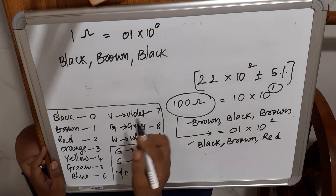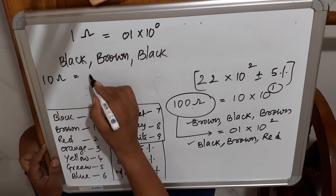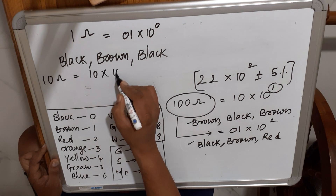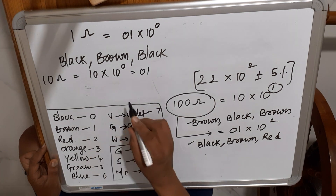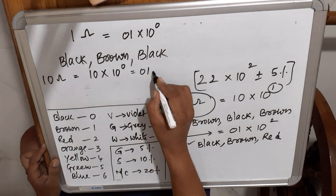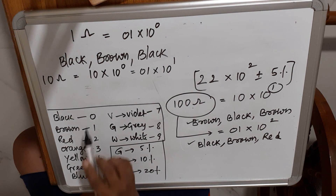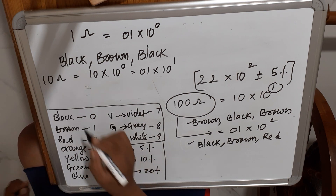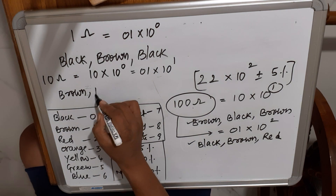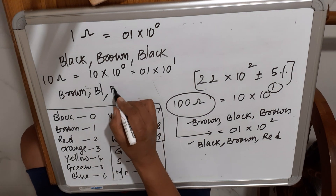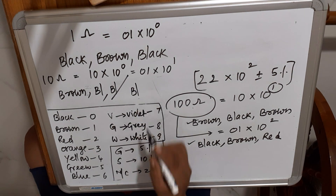For 1 ohm: write as 01 × 10⁰. Color sequence: Black (0), Brown (1), Black (10⁰). For 10 ohm: write as 10 × 10⁰. Color sequence: Brown (1), Black (0), Black (10⁰). Alternatively, 1 × 10¹ gives Brown, then Black (0), then Brown (10¹).